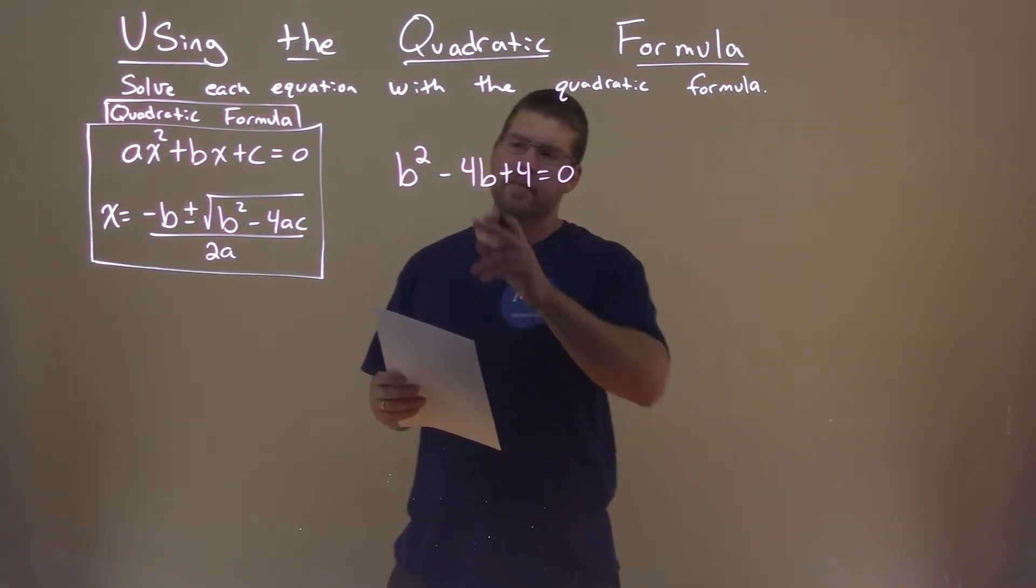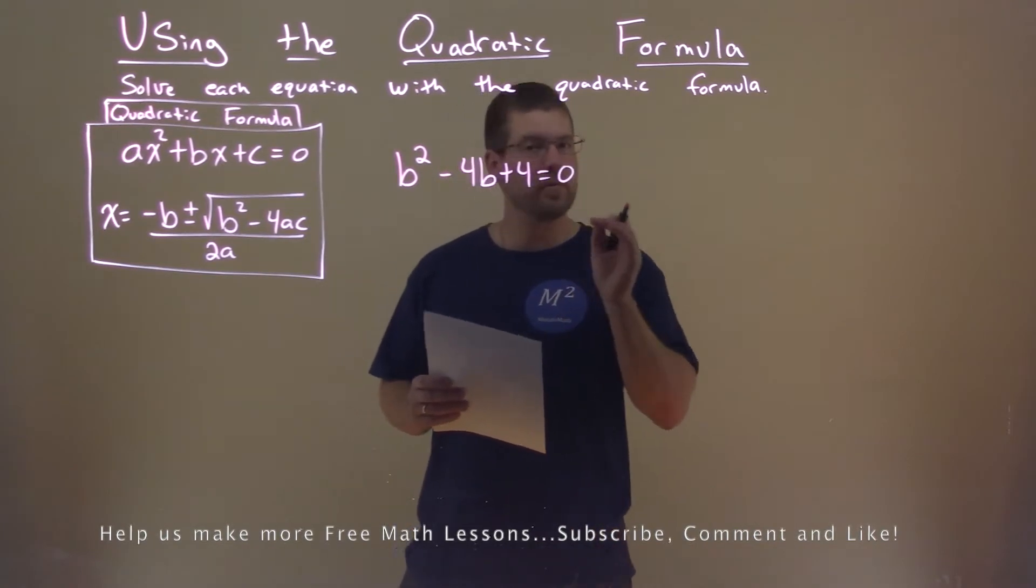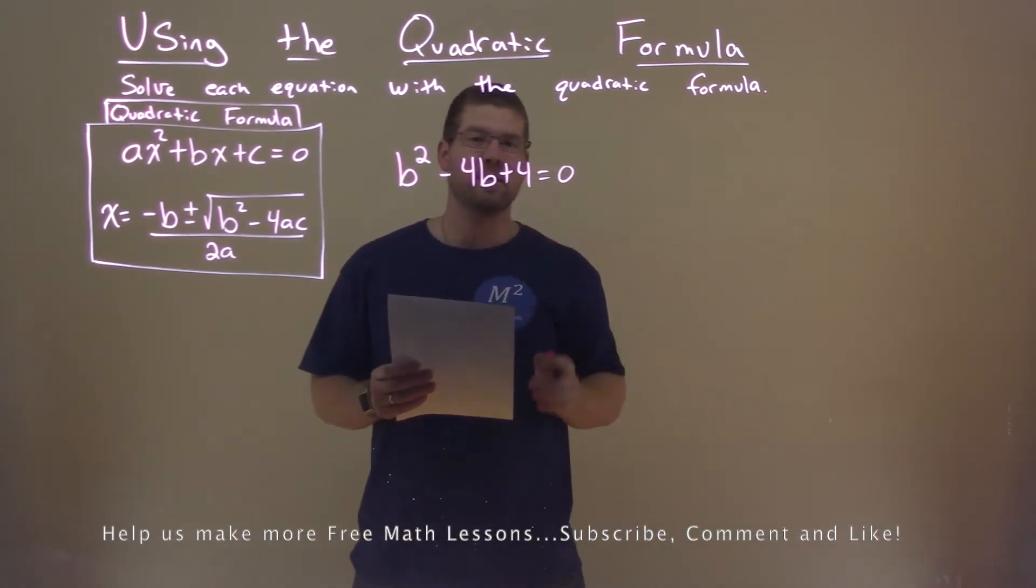We're given this problem right here: b squared minus 4b plus 4 equals 0, and we want to solve using the quadratic formula.